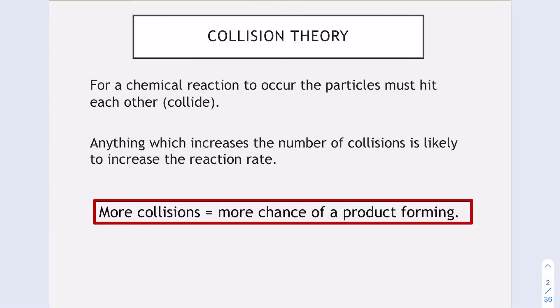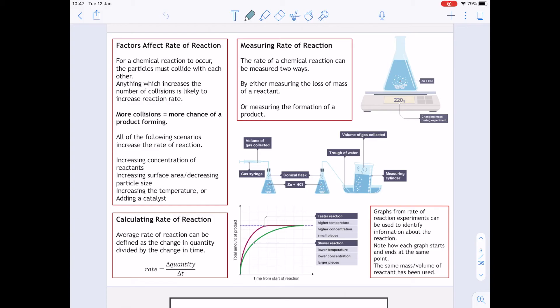So for a chemical reaction to occur, your particles must collide with each other. Now anything that increases the number of those collisions is likely to increase the reaction rate. Now there isn't a direct link between the two. Just because you have increased the number of collisions doesn't mean that you're going to increase the reaction rate. It's likely to happen. This slide basically explains all of rates of reaction at National 5 level.